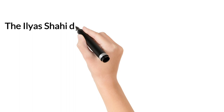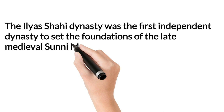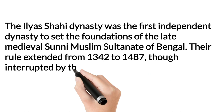The Ilyas Shahi dynasty was the first independent dynasty to set the foundations of the late medieval Sunni Muslim Sultanate of Bengal. Their rule extended from 1342 to 1487, though interrupted by their slaves as well as the House of Ganesha.